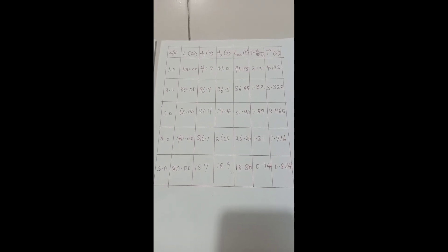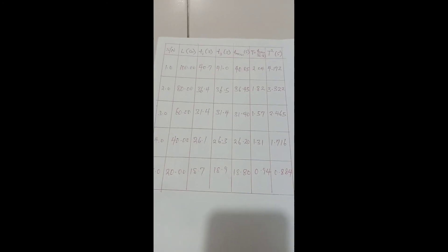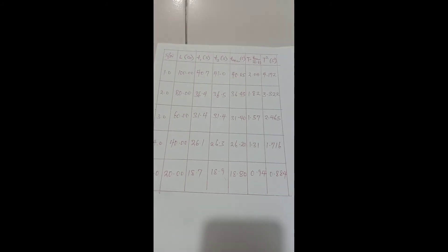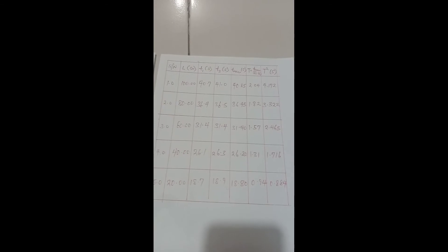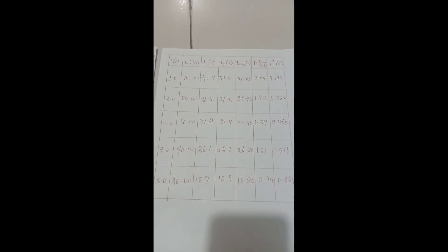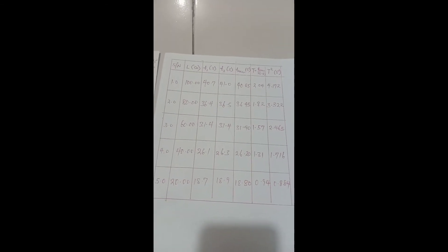This is how the table looks. The table is compiled with L — the length of the string — the first time T1, the second time T2, and then the mean of the two times, T-mean. Then the period, capital T, which is the mean divided by the number of oscillations, which is 20 for this experiment, and then the period squared, T squared.